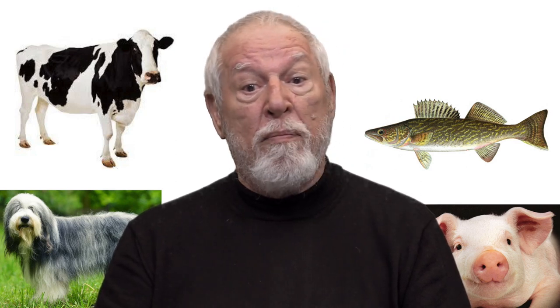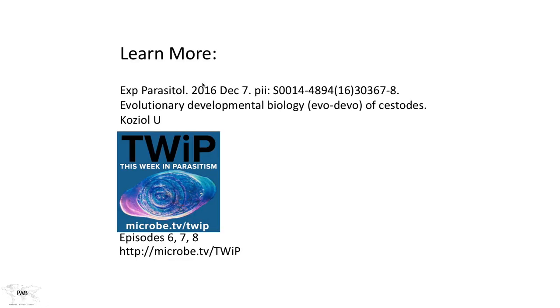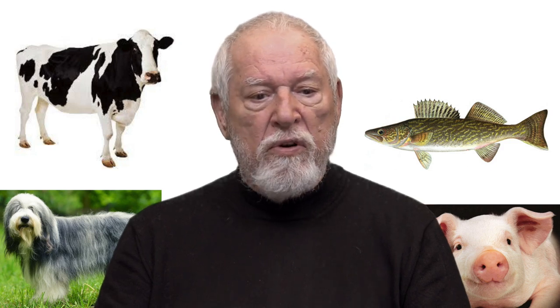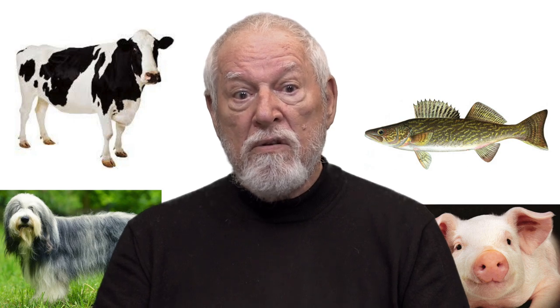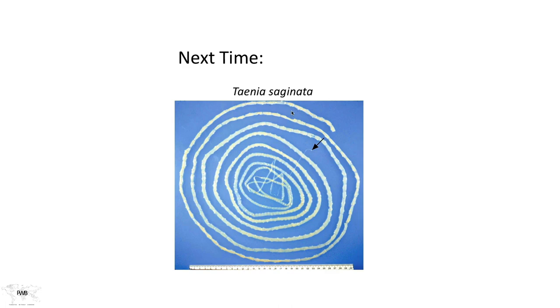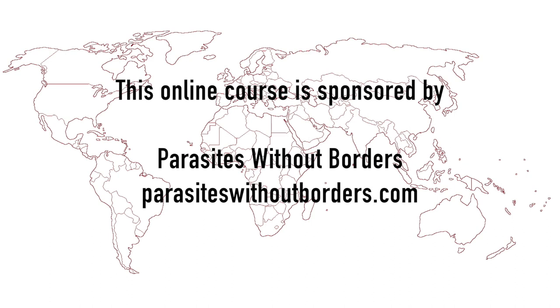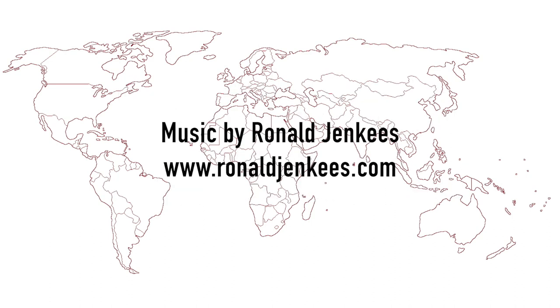If you want to know more about the evolutionary developmental biology of cestodes, there's an excellent recent review article selected for you. We've discussed tapeworms at least three different times on microbe.tv/twip, and we recommend you go listen because some of those stories relate to biology we may not cover when discussing the clinical aspects of tapeworm infections. The next time we meet, we'll be discussing Taenia saginata, our first example of an adult tapeworm that infects humans. Thanks for listening — we'll see you next time.